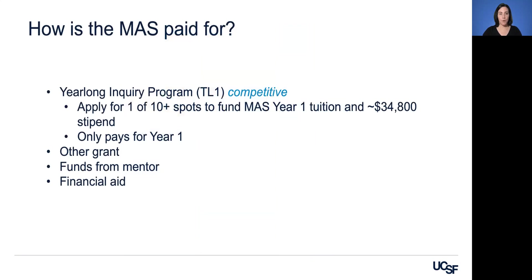How is the MAS paid for? UCSF students are eligible to apply for a year-long research fellowship grant through the inquiry funding office called the year-long inquiry program. This is funded by an NIH T01 grant and is a competitive program. Please note this only pays for one year of funding for your degree. Some students support their MAS training through other grants or funds from their mentor, or students are eligible to apply for financial aid.